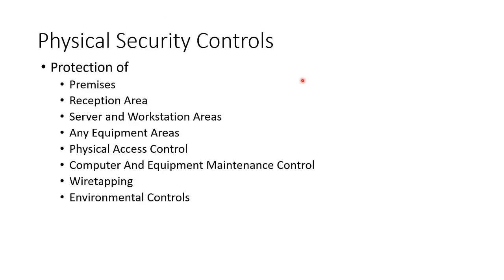Part of your whole information security policy will include physical controls — what will have biometrics versus keypad cipher locks versus cameras versus guards versus gates. Physical security controls protect the premises, which protects servers and workstations. You need to protect how people come in at the reception area, where equipment is, physical access control, how you maintain computers and equipment, the risk of wiretapping, and environmental controls — all of these support information security protection.